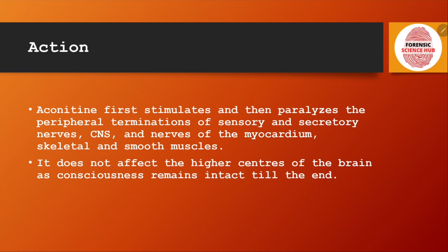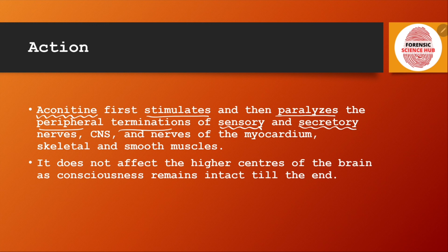The most common active principle of the Aconite plant is Aconitine. Aconitine first stimulates and then leads to paralysis of the peripheral termination of nerves — specifically sensory nerves, which are responsible for sensing, and secretory nerves, which stimulate the activity of the vascular system. It also paralyzes the central nervous system, the nerves of the myocardium, nerves of the skeletal system, and smooth muscles. Notably, it does not affect the higher centers of the brain, as consciousness remains intact till the end.